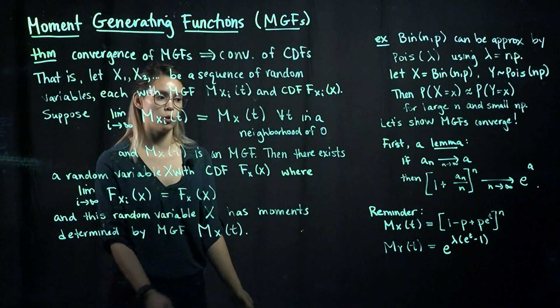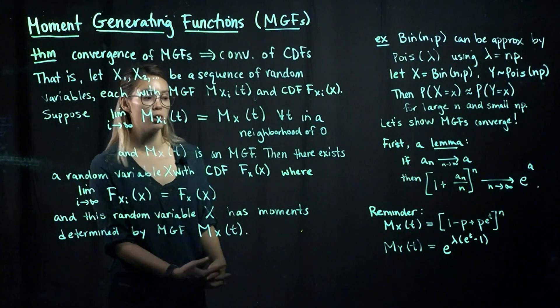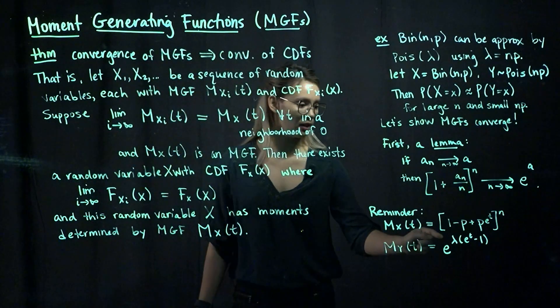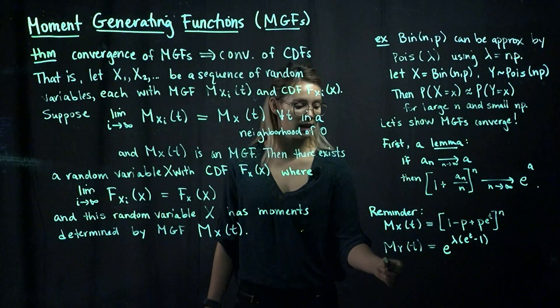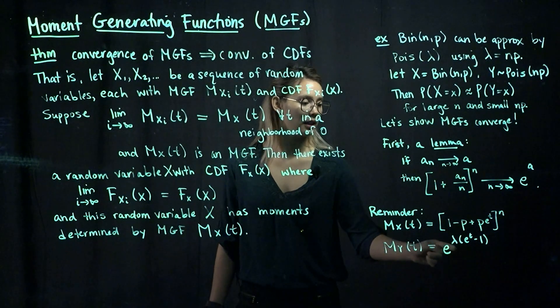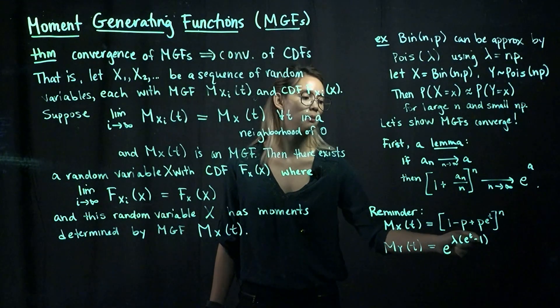And then just a reminder, what is the MGF for a binomial? That is here, 1 minus p plus p e to the t, all of that to the n. And then for a Poisson, we have e to the lambda times e to the t minus 1.